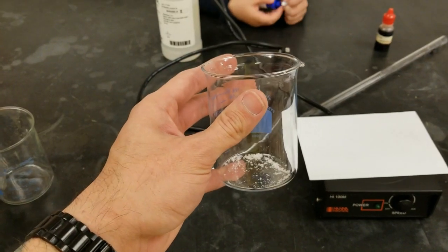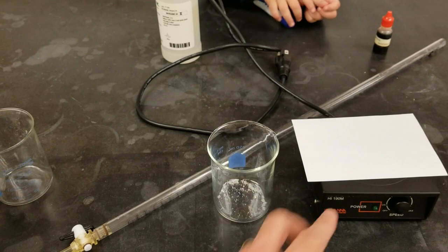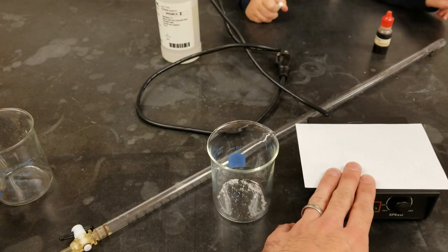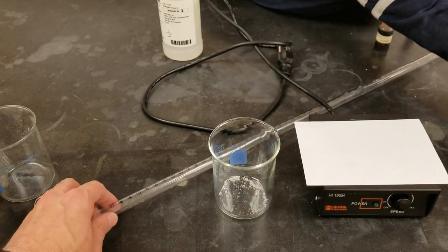We've got our oxalic acid powder here. I'm going to be adding some distilled water, stirring it on the stir plate and conditioning the burette with the sodium hydroxide as that is mixing.